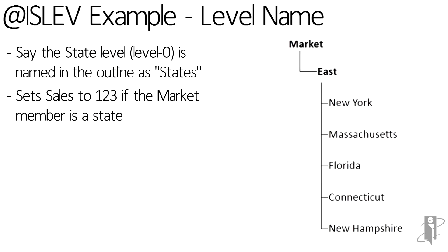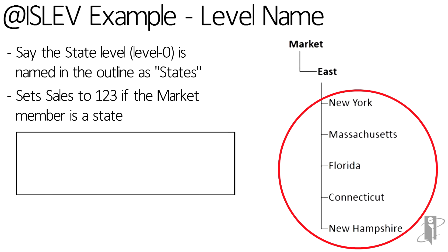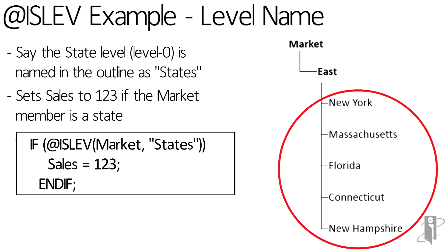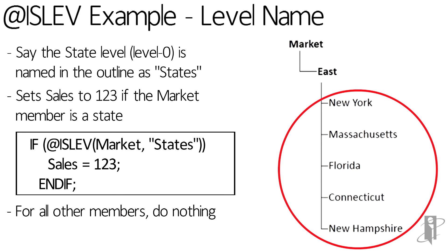Now let's take a look at an ISLEV function using level name. In our outline, we've named level zero as 'states'. In this syntax, we're looking in the market dimension under 'states', and if the member is from that level, we want sales to return 123. For all other members, we don't want to do anything.